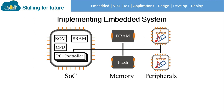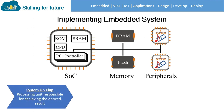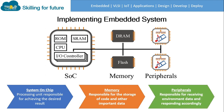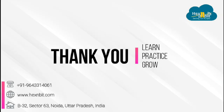Finally, implementing an embedded system. The simplest block diagram has three parts: SoC (System on Chip), memory, and peripherals. The SoC is the processing unit responsible for achieving the desired result. Memory is responsible for storing user code and other important data. Peripherals are the sensors and actuators connected to the embedded system to interact with the real world — they receive data from the environment and respond accordingly. That's all for this session; see you in the next lecture.